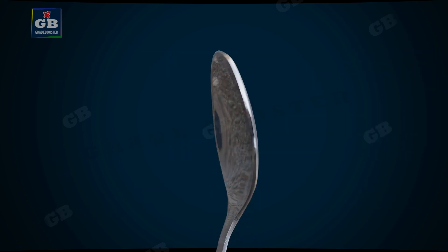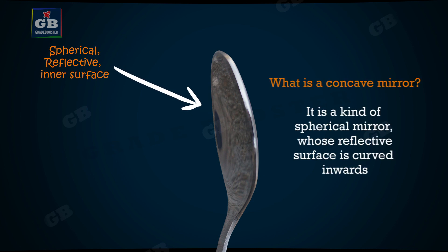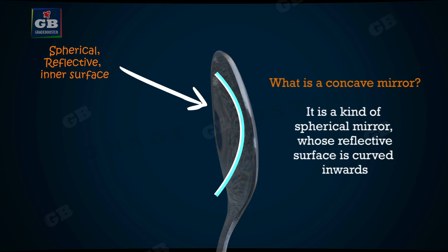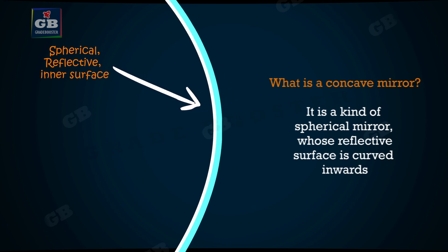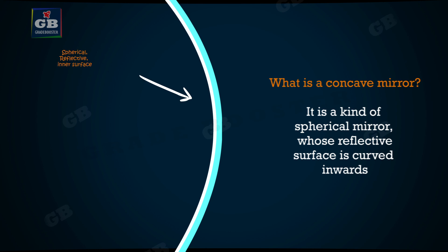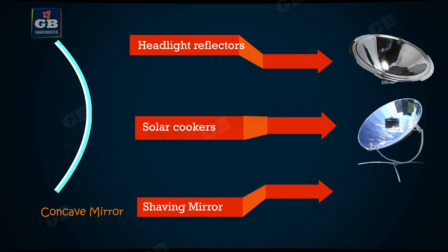Now come to the inner surface of the spoon. The inner surface of the spoon acts like a concave mirror. If the reflective surface of the spherical mirror is curved inwards, it is called a concave mirror. Examples of concave mirrors are automobile headlights, solar cookers, and shaving mirrors.